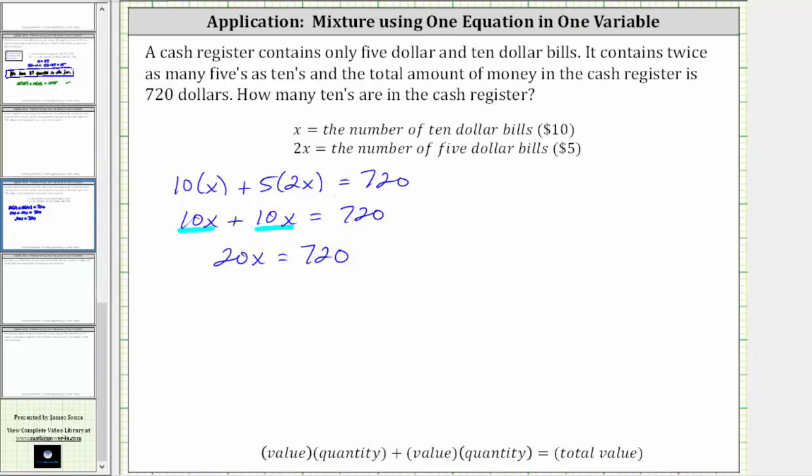The last step to solve for x is to divide both sides by 20. Simplifying, 20 divided by 20 is one, one times x is x. We have x equals 720 divided by 20, which is equal to 36.